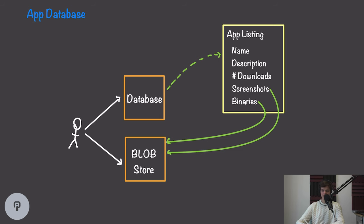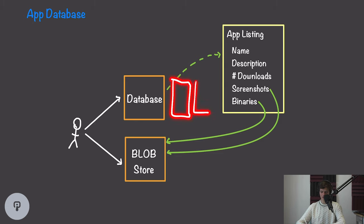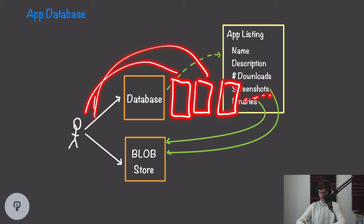The core piece of this system is the app database. We want some system that can store all of the metadata about all of the apps — information such as the app name, description, number of downloads, screenshots, and binaries. We could use any database we want for this. Because of the load we're placing on this database, we're probably going to want to replicate it so we can handle all read requests, with multiple instances distributing the load across all of them.